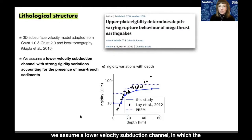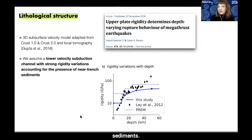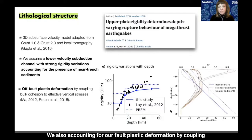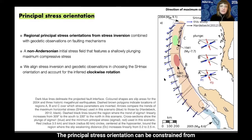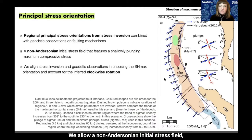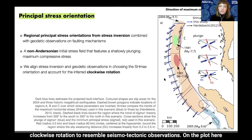We account for off-fault plastic deformation by coupling bulk cohesion to effective vertical stresses. The principal stress orientation is constrained from stress inversion combined with geodetic observations on faulting mechanisms. We allow a non-Andersonian initial stress field with a plunge of the maximum compressive stress, and align the stress inversion and geodetic observations by choosing SH-max orientation and accounting for an inferred clockwise rotation along arc.